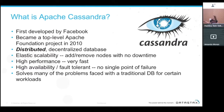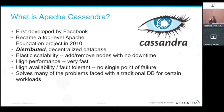Cassandra is a distributed, decentralized database — those are the key words to remember. It is elastically scalable: you can add and remove nodes with no downtime. It has very high performance, high availability, and fault tolerance. There is no single point of failure.